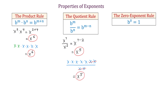The next property is the zero exponent rule: b to the zero power equals 1. In this property, b cannot be zero, so any nonzero number raised to the zero power equals 1. For example, x to the zero power equals 1.